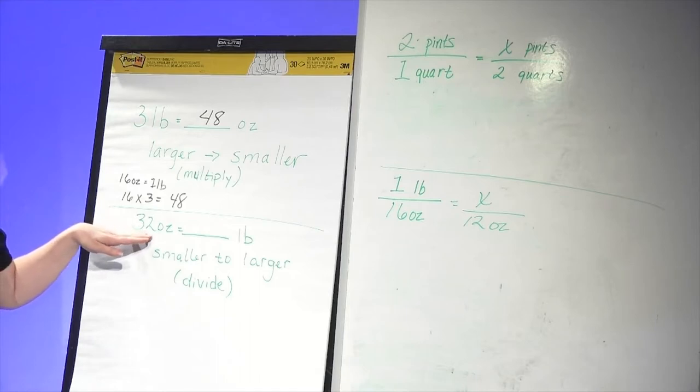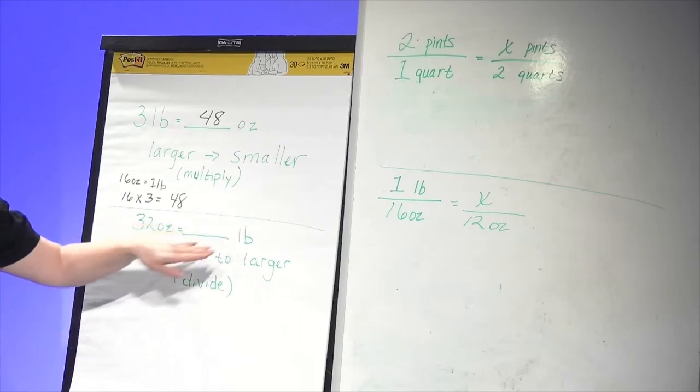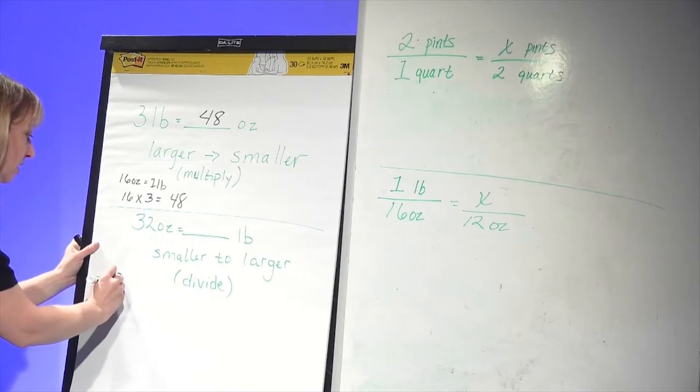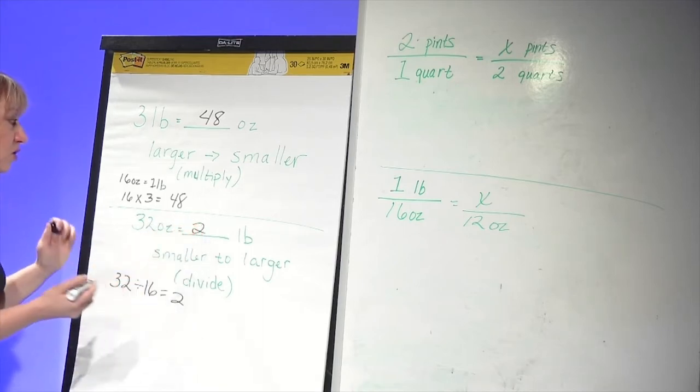Here's another example, 32 ounces. Now we're going from ounces to pounds. We want to know how many pounds are in 32 ounces. Now we're going from a smaller unit to a larger unit, from ounces to pounds. So we're going to divide. It almost sounds like the opposite of what you would think. But again, we're going from smaller to large. So we're going to divide this number. So we know 16 ounces are in one pound, so you do 32 divided by 16. You get two. So 32 ounces is two pounds.